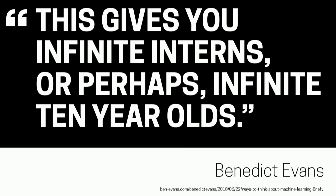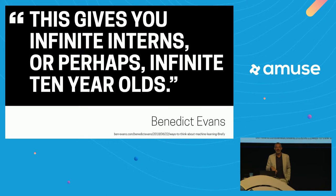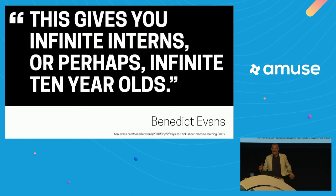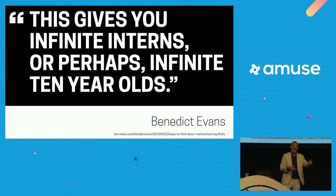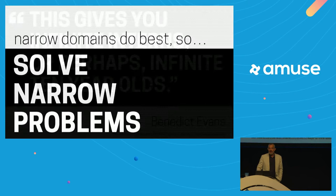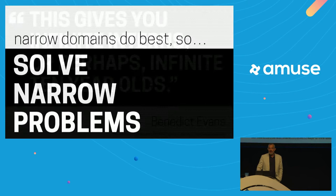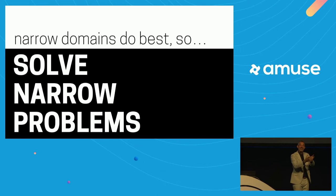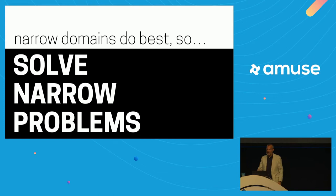Five years ago, if you gave a computer a pile of photos it couldn't do much more than sort them by size or identify primary colors. A ten-year-old might sort them into men and women. A fifteen-year-old might sort them into cool and uncool. An intern might say 'this is interesting.' We're still at the ten- or fifteen-year-old level — but what would you do if you had a million fifteen-year-olds look at data in some narrow domain? We can solve narrow problems, and those don't have to be small problems.